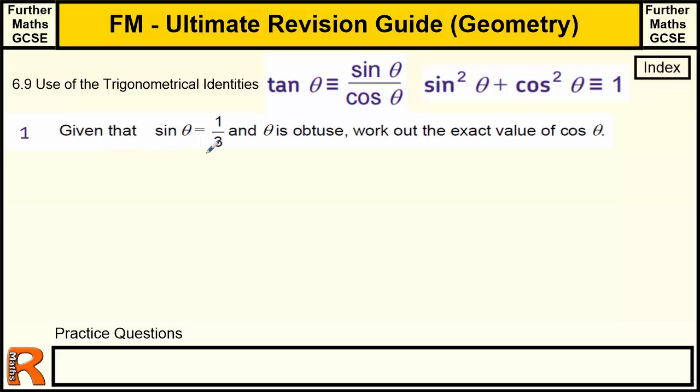So sine theta is a third, so we've got one third squared, because that's sine squared theta. So sine squared is one third squared, plus cos squared theta equals one. So cos squared theta equals one minus one third squared. One third squared is one ninth, because one times one is one, three times three is ninth. So one minus one ninth is eight ninths. So cos theta equals the square root of eight ninths.